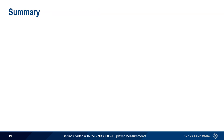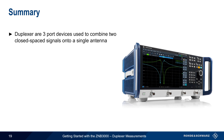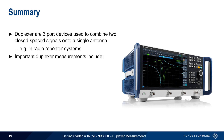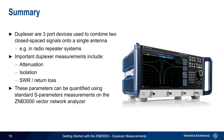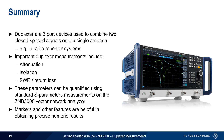Let's end with a brief summary. Duplexers are three-port RF devices that combine two closely spaced signals onto a single antenna — a common scenario in radio repeater systems. There are three primary duplexer measurements: attenuation, isolation, and SWR or return loss. All three can be measured on the ZMB3000 using standard S-parameter measurements, either on a single duplexer port or between a pair of duplexer ports. The ZMB3000 also supports a wide range of marker types and values, useful for obtaining precise numeric measurement results. This concludes our presentation on getting started with the ZMB3000 duplexer measurements.